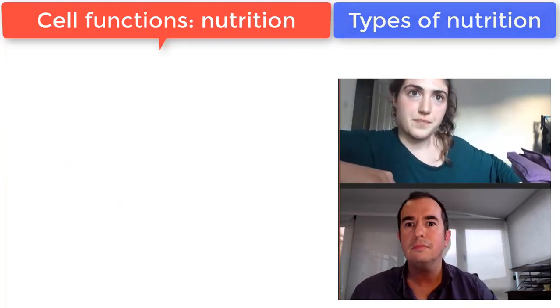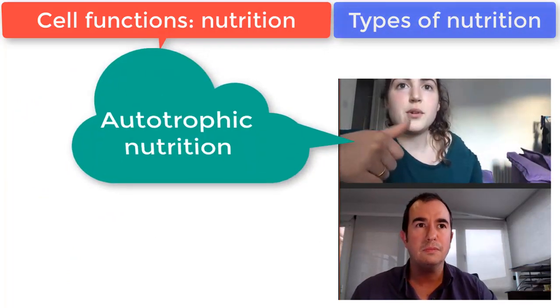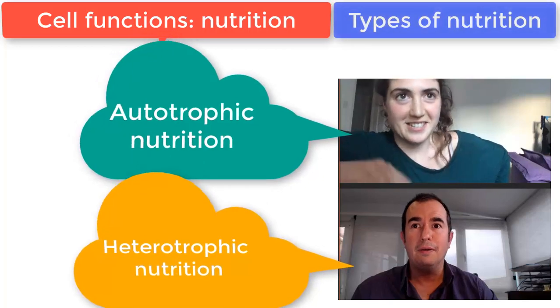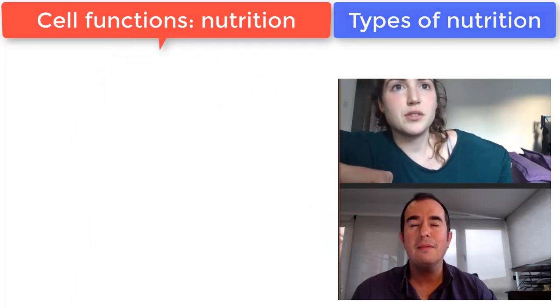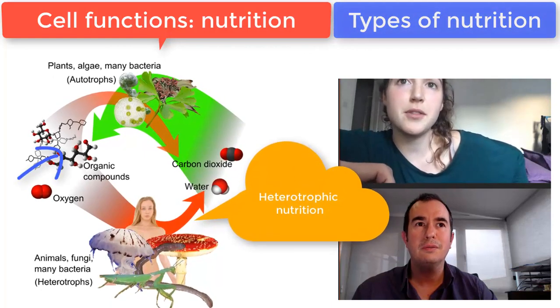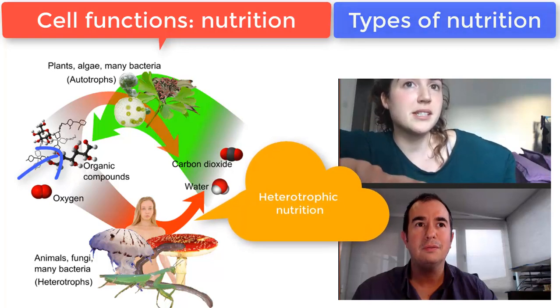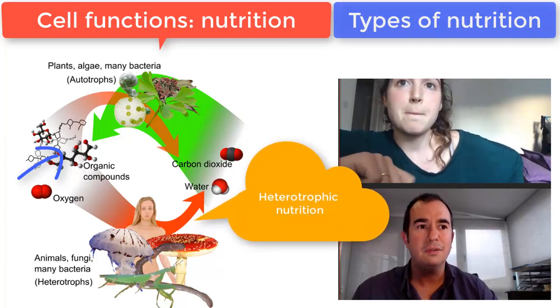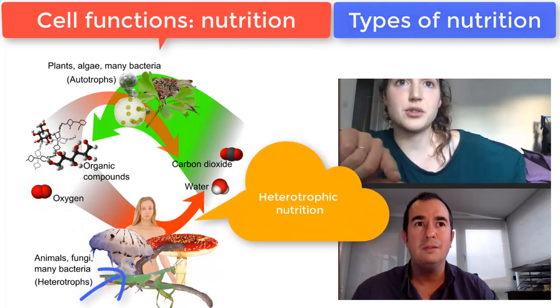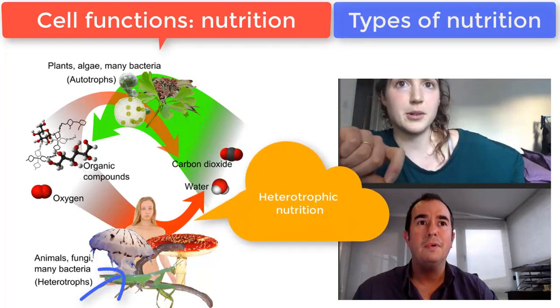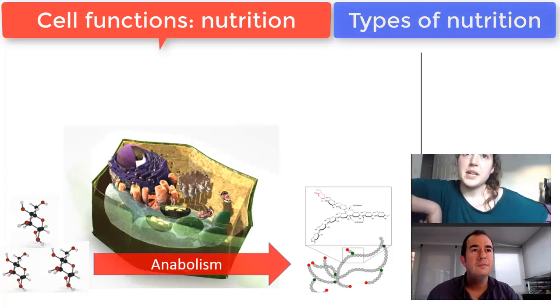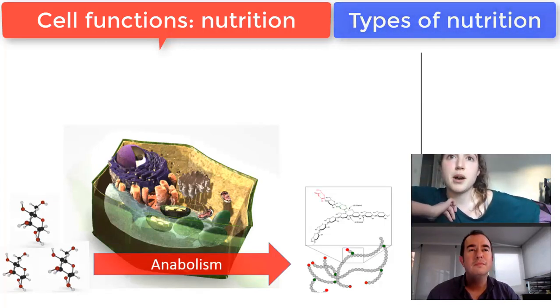Now we're going to talk about the different types of nutrition. You have autotrophic nutrition and heterotrophic. Heterotrophic nutrition consists in cells incorporating organic matter previously created by other organisms because they are unable to synthesize organic compounds to use as food. So animals, fungi, and many protists are heterotrophs and they digest organic compounds. One example would be glucose, which is a simple carbohydrate.